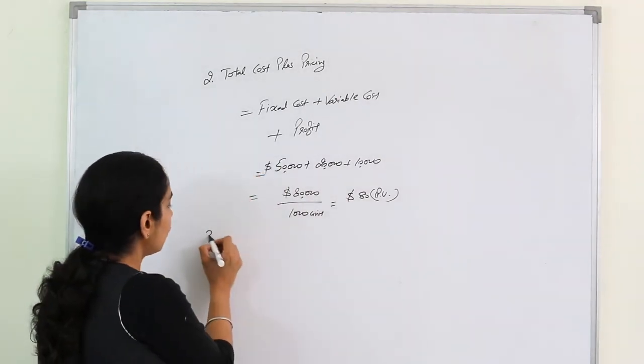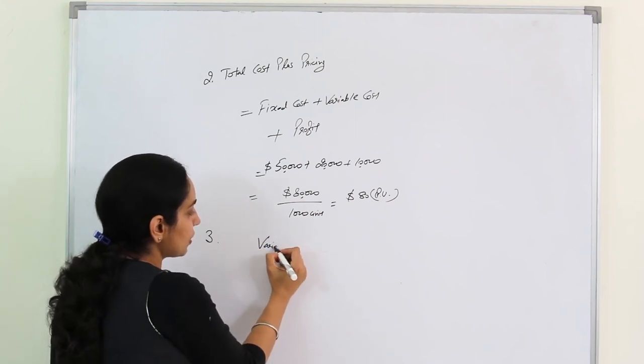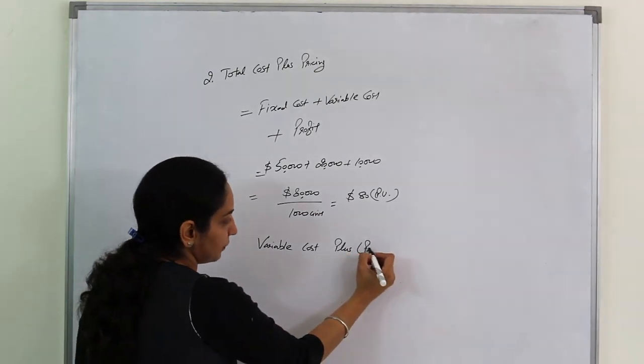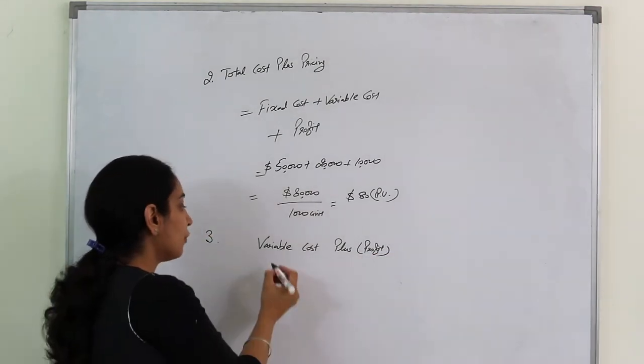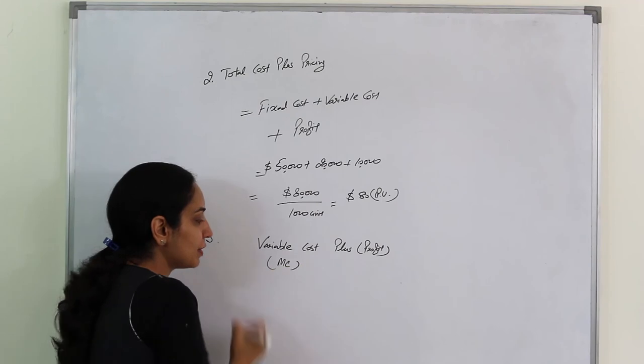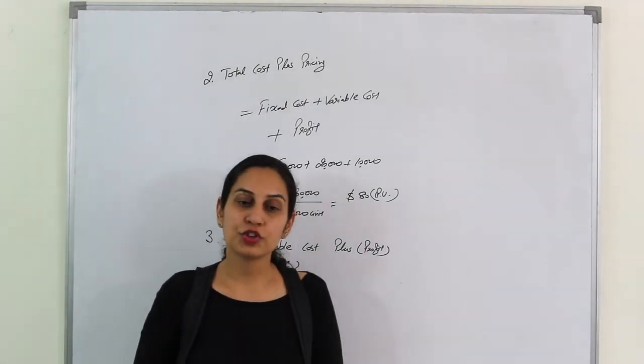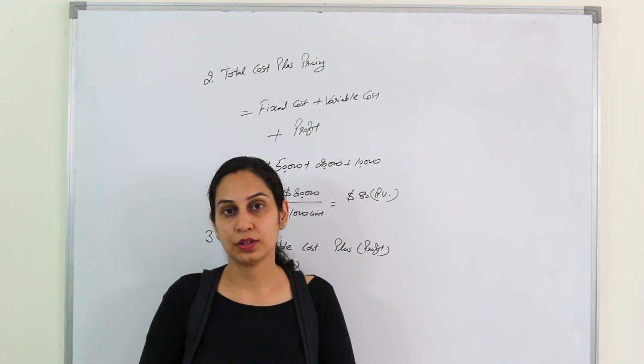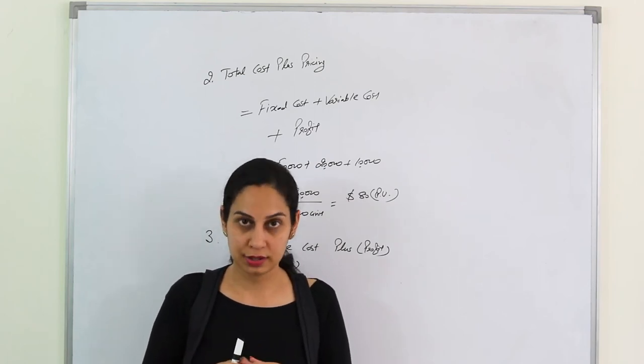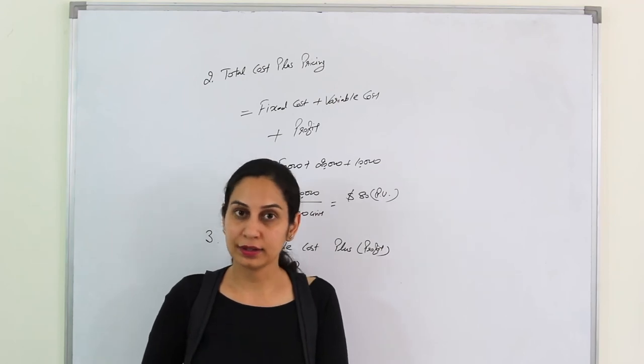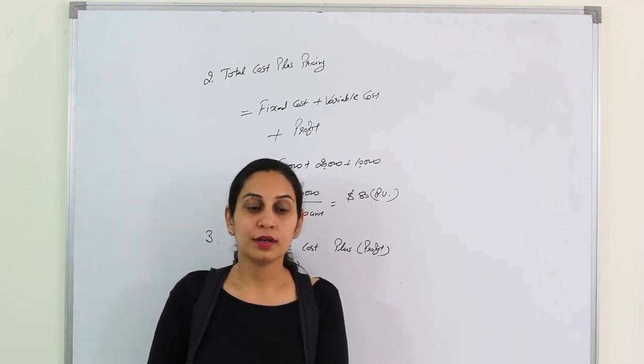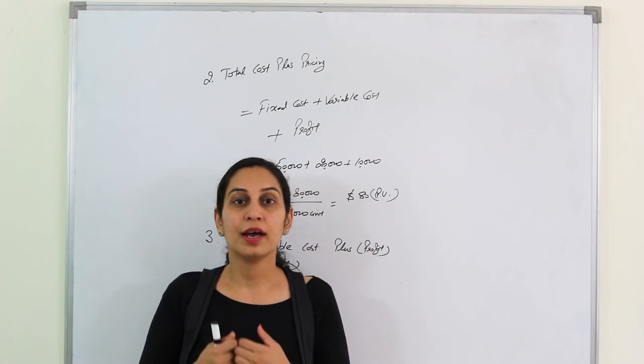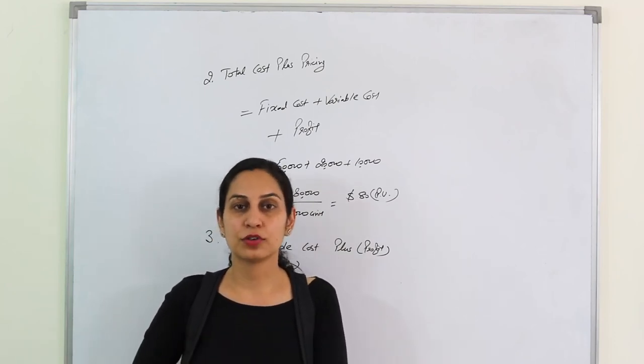Third method could be variable cost plus profit. Variable cost is also called marginal cost, MC, as we discussed. This happens in situations when company deals in competitive products where company is not in position to recover total cost. So company sees how much marginal cost it spent, adds profit to that, and sells the product based on that. Because in short run they may not be able to recover the fixed cost. So they basically try to recover variable cost first, and then later on gradually they charge their fixed cost also.